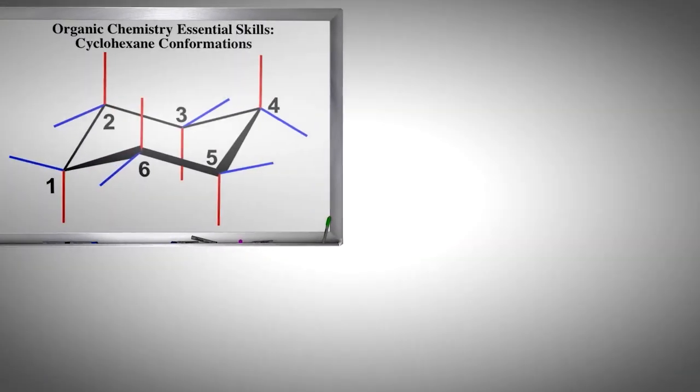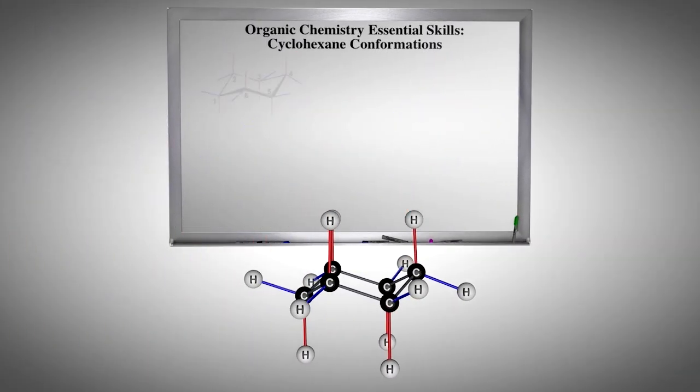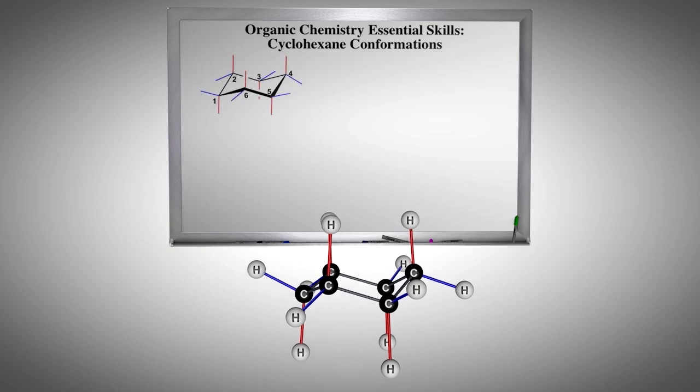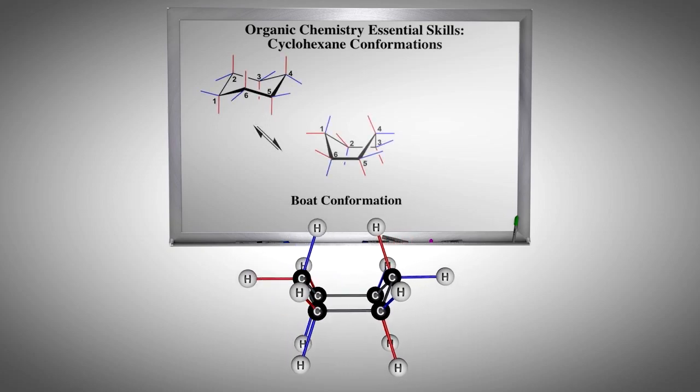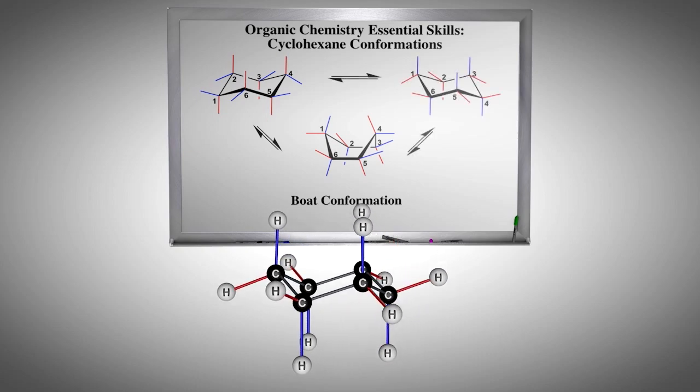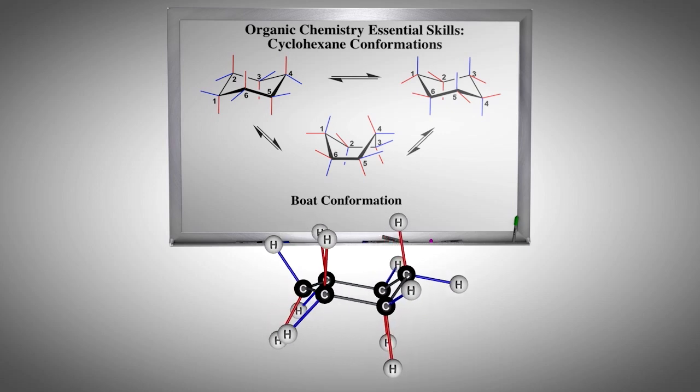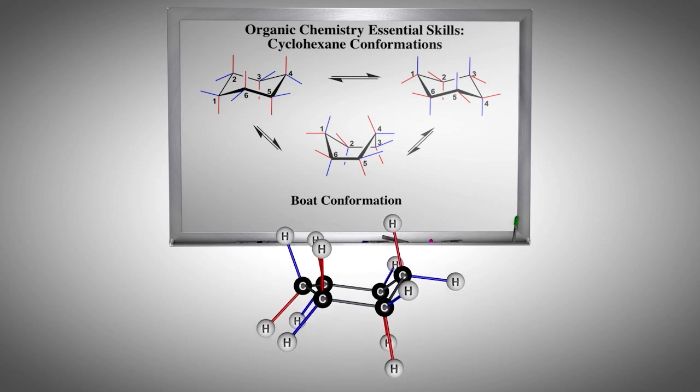All molecules are in constant motion, and the chair conformation of cyclohexane is no different. Here we see the chair convert to a boat conformation and then to the other chair. Your instructor will often call these conformational changes chair inversion or chair flip.